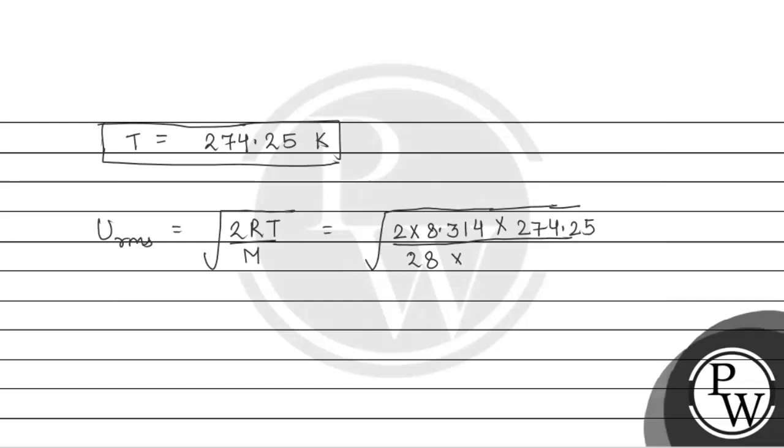This is 28 gram per mole. To convert it to kg per mole, we multiply by 10^-3. This gives us under root 4560.229 divided by 28 × 10^-3, which equals under root 162865.321, which equals 403.566 meter per second.